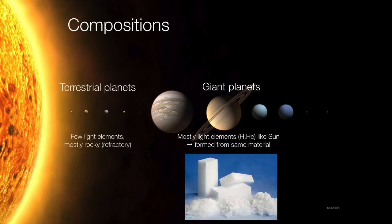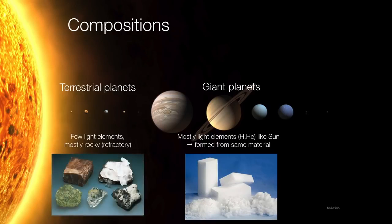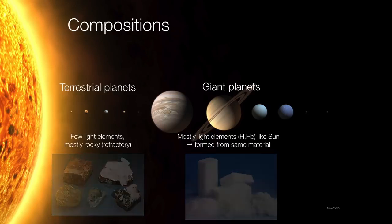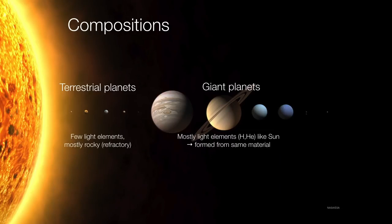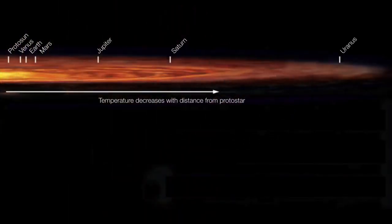But terrestrial planets, on the other hand, have relatively few of these lightweight elements. And they're mostly composed of rocky or refractory materials. So minerals, olivines, and so forth. So why then are these two types of planets so very different from one another in terms of their composition? And the answer goes back to the formation of the planets themselves.